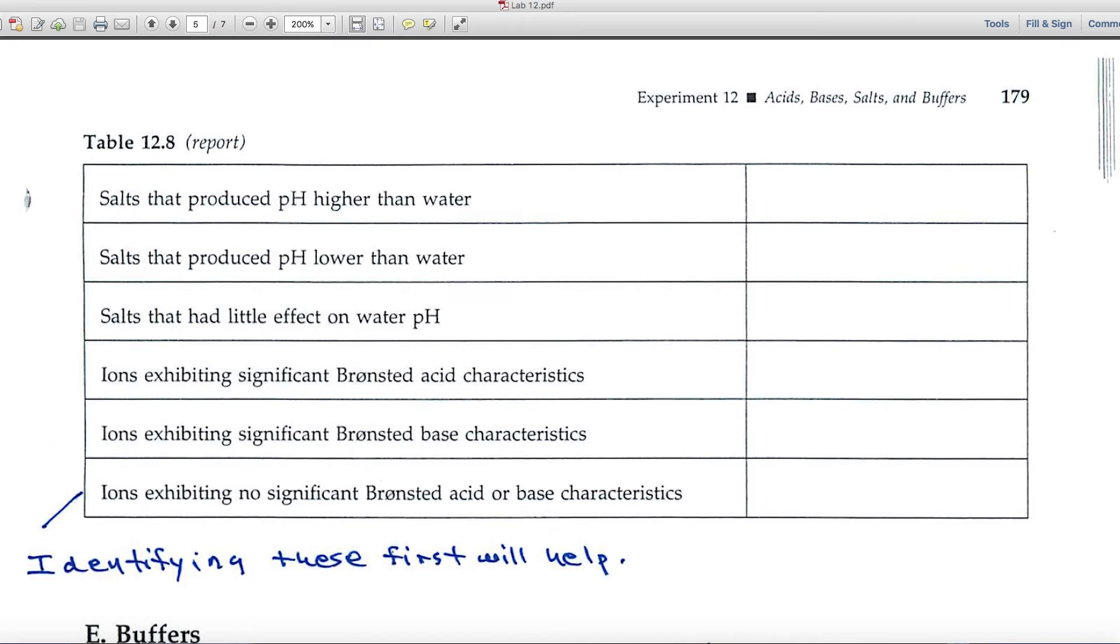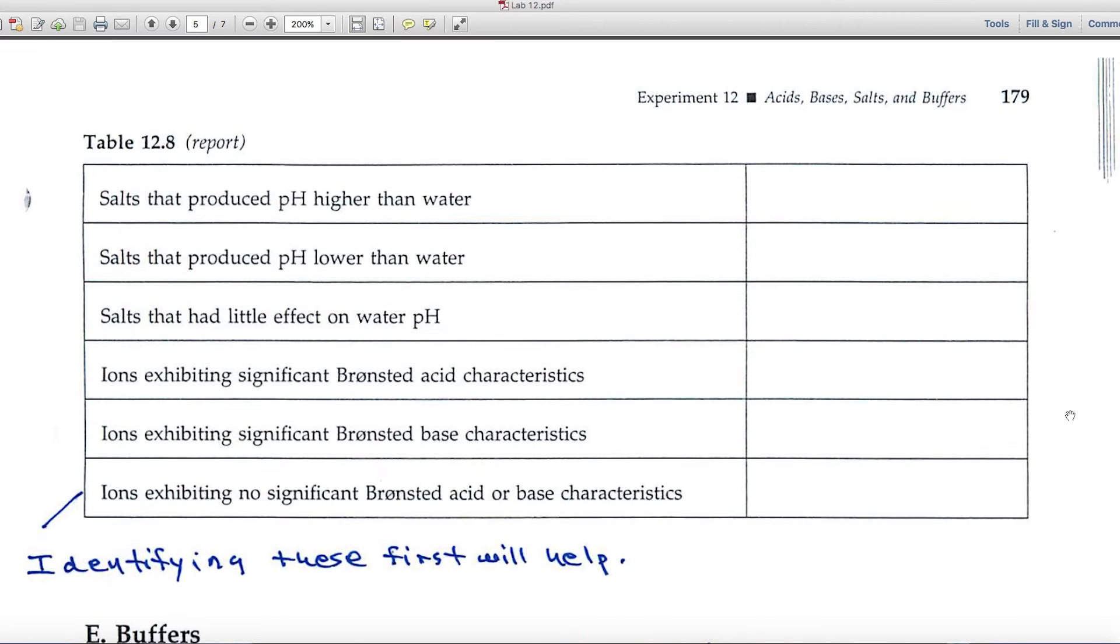And here in the report page, it asks now for salts that had pH higher than water, so in other words above 6. pH lower than water, below 6. And those that have little effect, well they would be very close to 6.